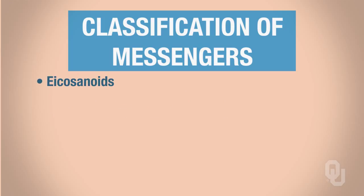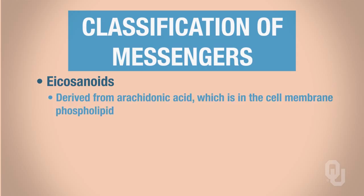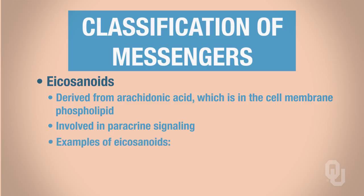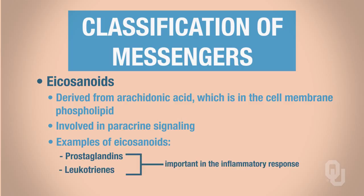Our next chemical class is the eicosanoids. The eicosanoid ligands are all derived from arachidonic acid, which is found within the cell membrane. All of these chemical messengers are involved in paracrine signaling, and paracrine messengers do not travel through the blood. Examples of eicosanoids include prostaglandins and leukotrienes, which are very important in inflammation, and thromboxanes, which are important in blood clotting.